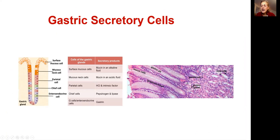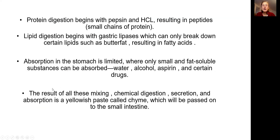The gastric pit is here, and here are the parietal cells and chief cells. To repeat: G cells, which are enteroendocrine cells, produce gastrin, which stimulates parietal cells to produce hydrochloric acid and intrinsic factor. Hydrochloric acid then converts pepsinogen from chief cells into active pepsin.